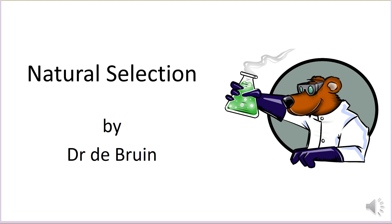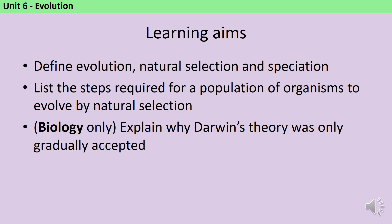This is a revision video about the GCSE biology topic of natural selection. It comes up in paper 2 of AQA GCSE Biology and Combined Science as part of the final unit about variation and evolution. In this video, we're going to define the terms evolution, natural selection, and speciation. We'll list the steps required for a population to evolve by natural selection, and then explain why Darwin's theory was only gradually accepted — though you only need that extra detail if you're taking GCSE Biology, often called triple science or separate science.